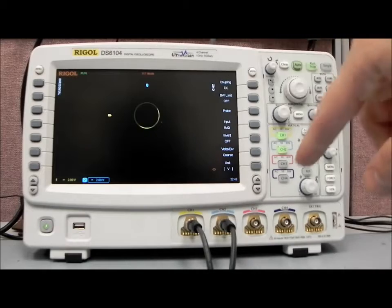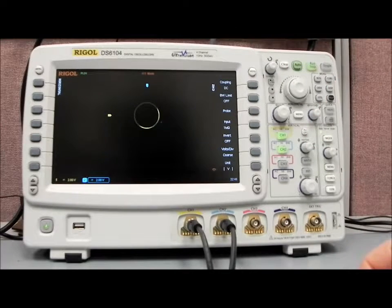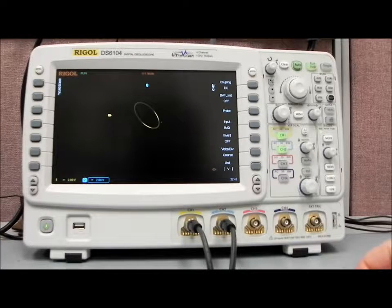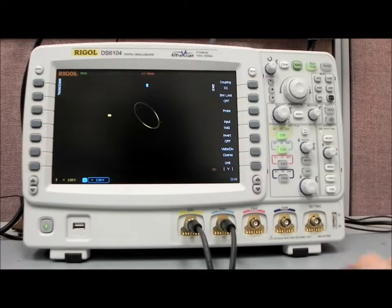So we're plotting X versus Y and now we get the phase is going to be a circle when they're 90 degrees out of phase. If we did something like 125 degrees out of phase, you'll see that will turn into an ellipse. So that can be very useful when you want to see the phase differential between two incoming signals.